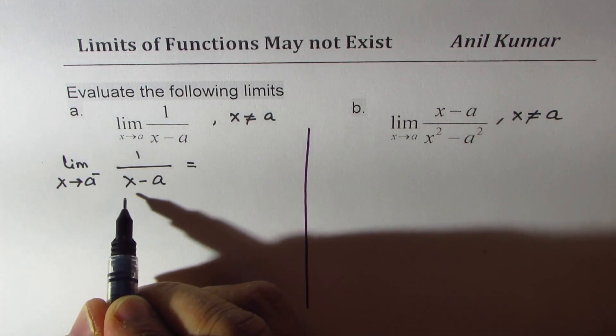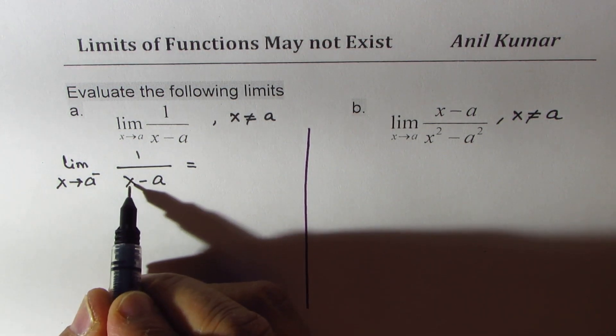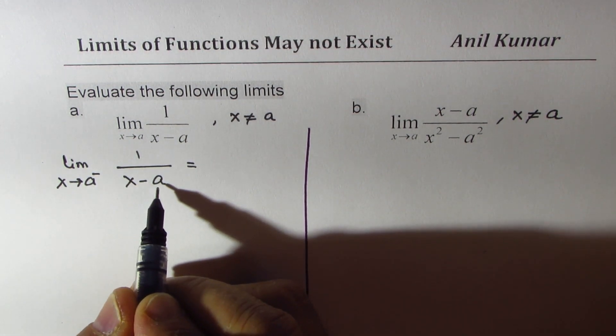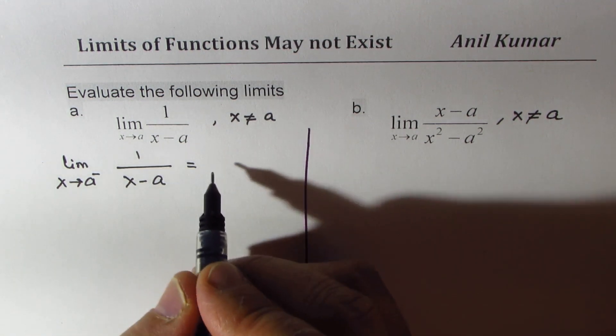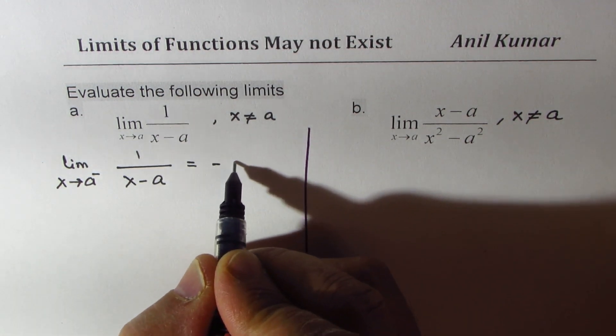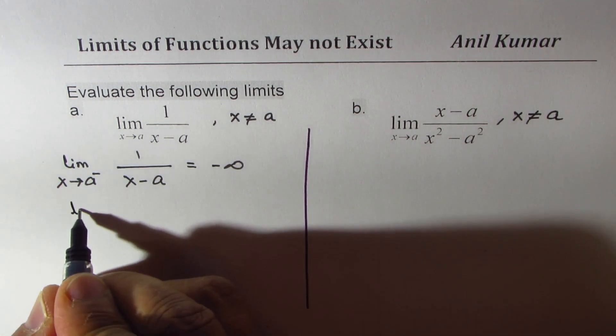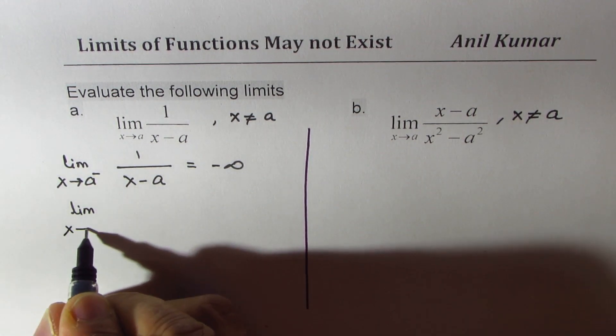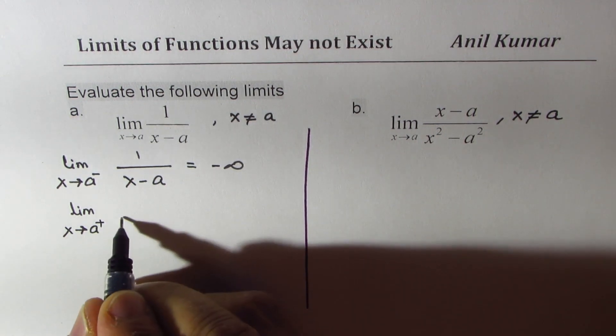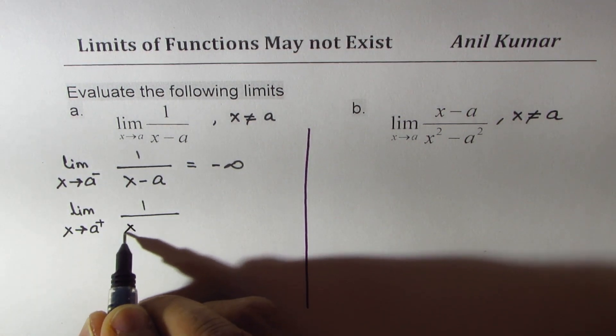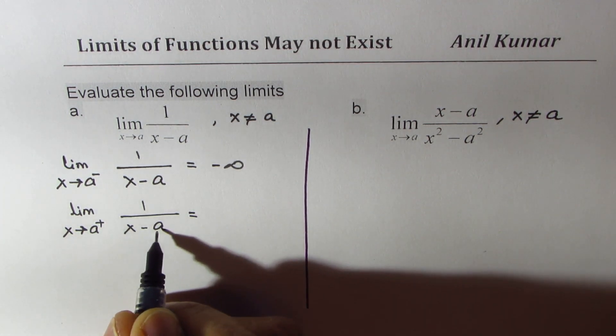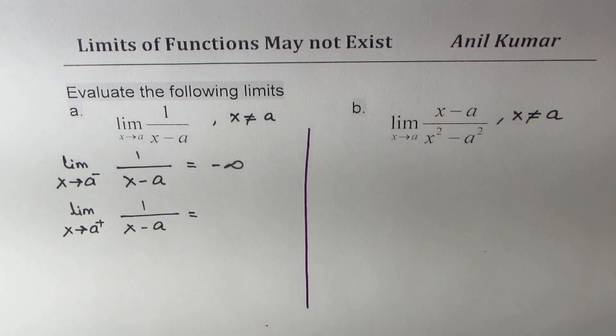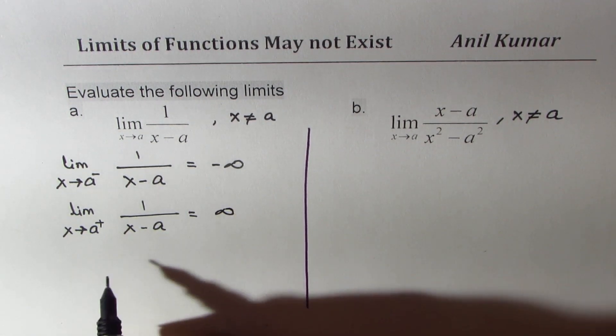So what you notice here is that if x is very close to a, but from the left side, then the value approaches negative infinity. On the other hand, if you find the limit when x approaches a from the right side for the same function, 1 over x minus a, since x value is slightly higher than a, we are still approaching infinity, but towards the positive side.